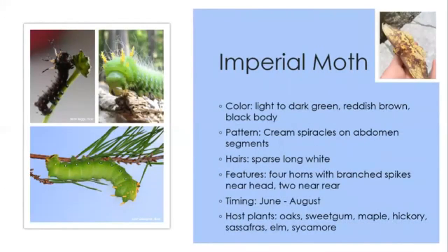The imperial moth caterpillar is another large bright green caterpillar — about four inches when fully grown. Early instars can be darker in color. We can see cream spiracles and sparse long white hairs. There are also four yellow barbed horns near the head and two near the rear. June through August, you can find them on oaks, maples, hickories, and a few other tree species.